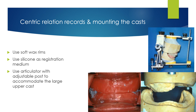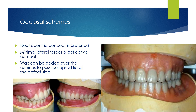To accommodate the upper cast, use an articulator that can be adjusted to accept the large cast. With definitive obturators, teeth are arranged according to the neutrocentric concept of occlusion, which minimizes lateral forces and deflective contacts. Wax can be added over the canine on the defect side to push the lip and create better aesthetic results.